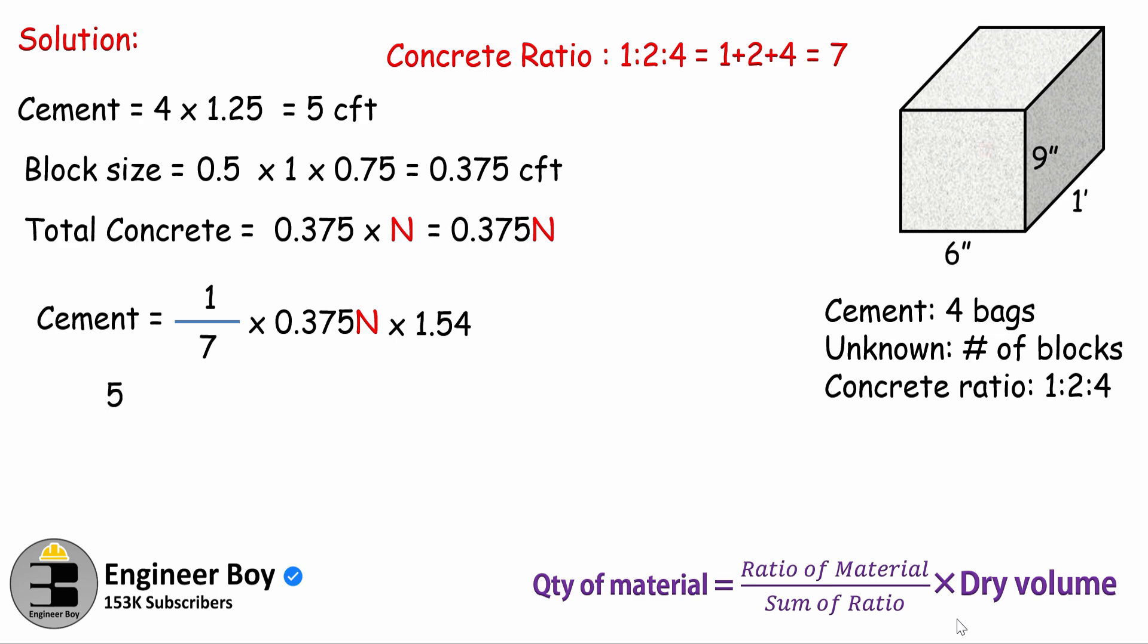Next, I'm going to simplify this thing a little bit more. We can put the value for cement, which is 5 CFT. Now 0.375 times 1.54 divided by 7 equals 0.0825N.